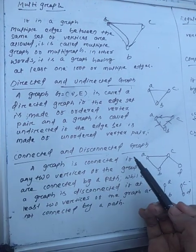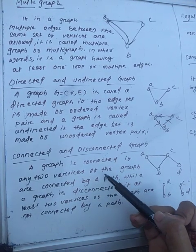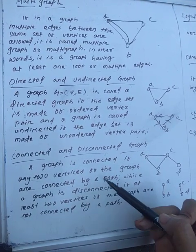So what are connected and disconnected graphs? A graph is connected if any two vertices of the graph are connected by a path.